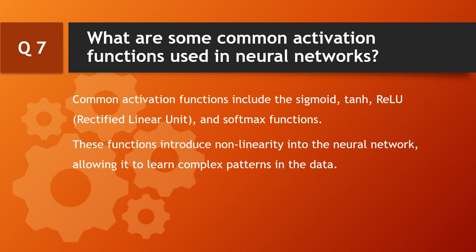Question: what are some common activation functions used in neural networks? Common activation functions include the sigmoid, tanh, rectified linear unit (ReLU), and softmax functions. These functions introduce non-linearity into the neural network, allowing it to learn complex patterns in the data.